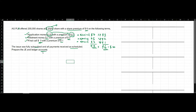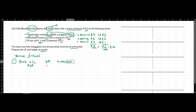Let's move on to the journal entries. The first entry is receiving money on application — $10 per share for 200,000 shares gives $2 million. When you receive money, the bank account is debited with $2 million, and the application and allotment account is credited with $2 million.